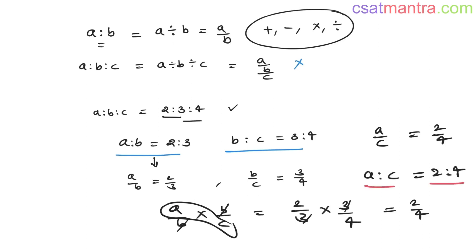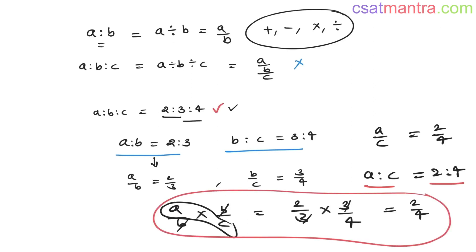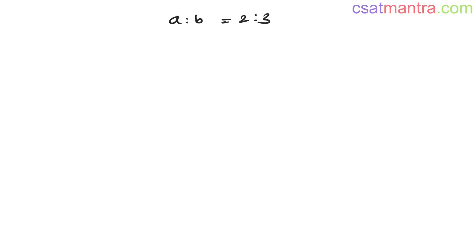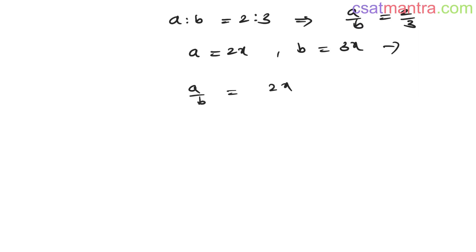You can write A is to C as 2 is to 4 directly from this equation without doing all that. On what basis? If A is to B equals 2 is to 3, it simply means A is in the form of 2x and B is in the form of 3x. From this we can write A by B as 2x by 3x, and x in numerator and denominator cancels, giving 2 by 3.